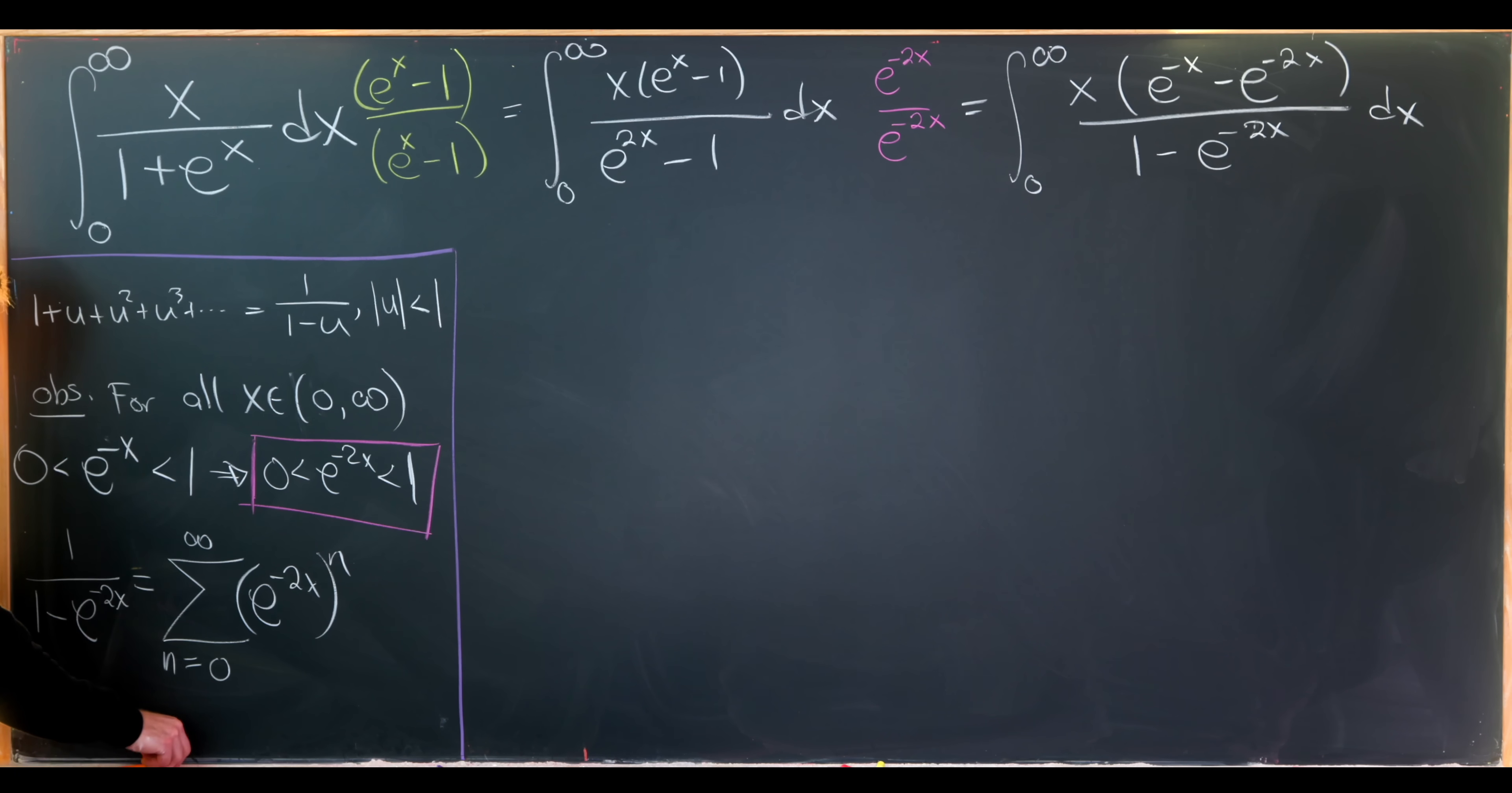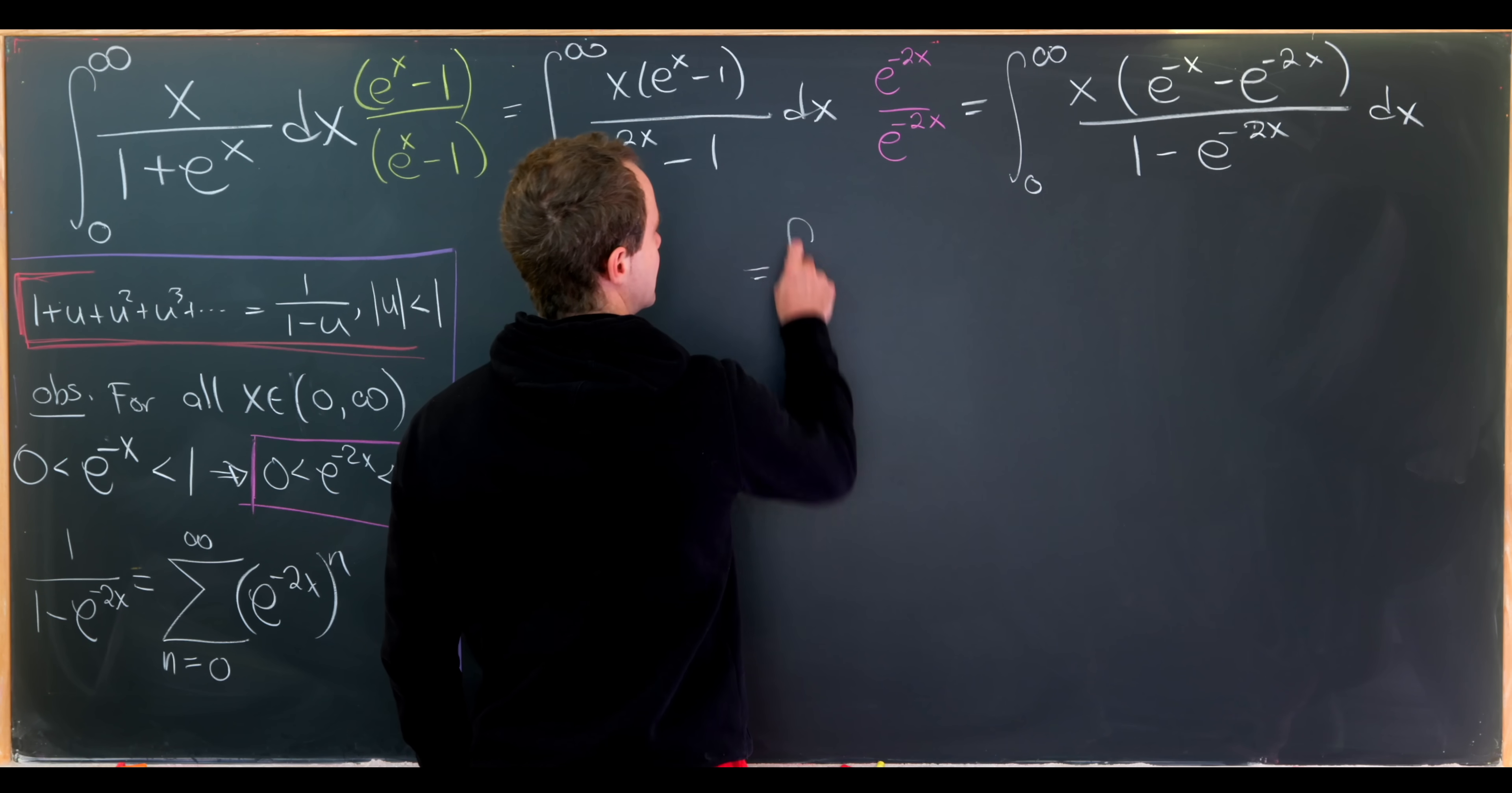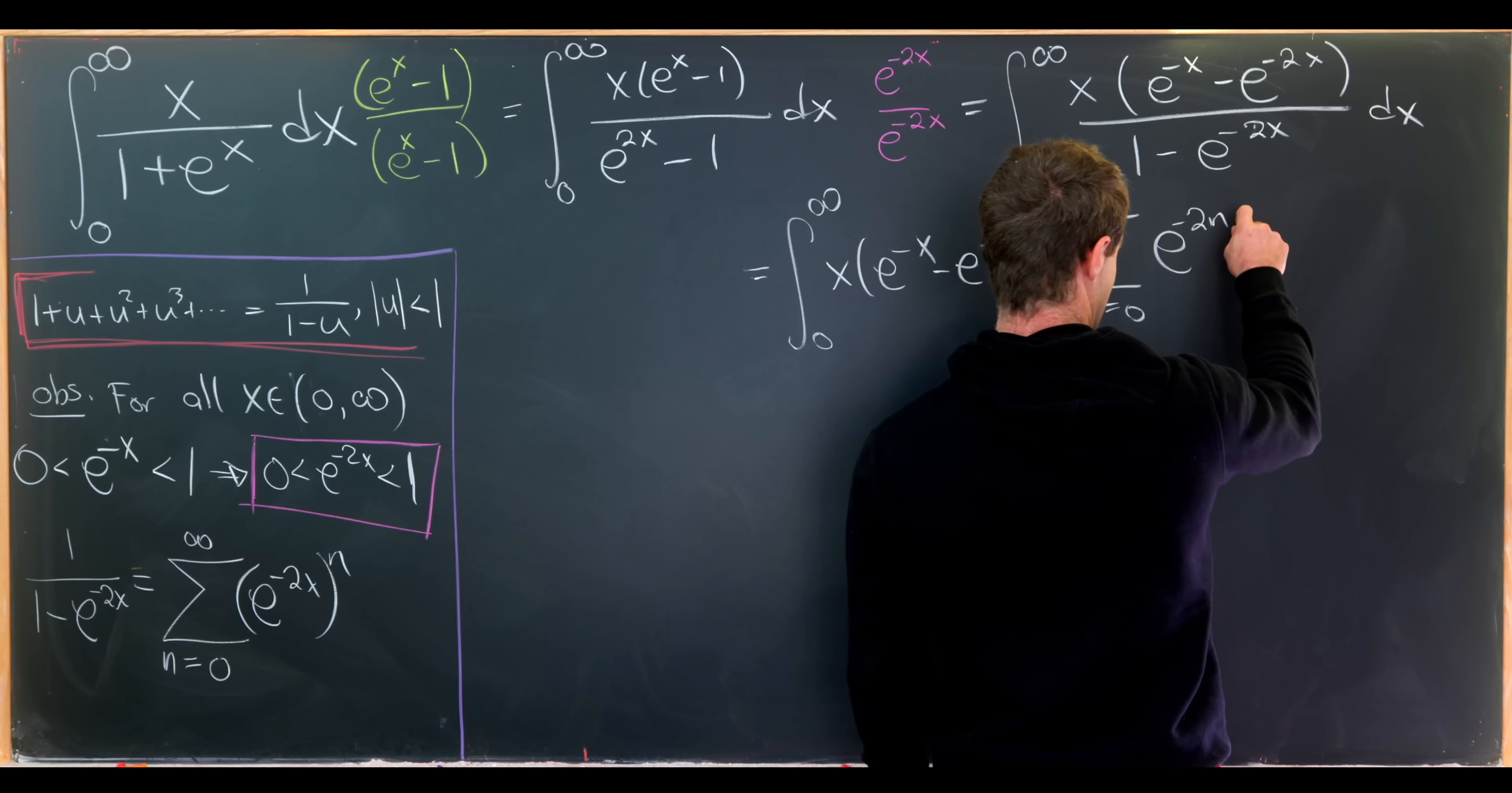So let's write that down. We have 1 over 1 minus e to the minus 2x will be equal to the sum as n goes from 0 to infinity of e to the minus 2x all raised to the n power. But now I can use exponent rules to rewrite this e to the minus 2x to the n as e to the minus 2nx, which is what we'll do when we rewrite this integral.